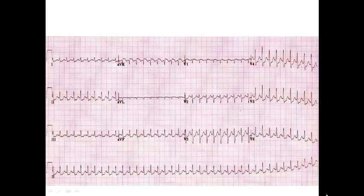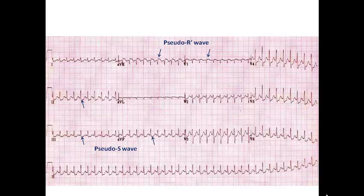We now discuss another ECG feature during SVT: pseudo-R' and pseudo-S patterns. Sometimes a small wave appears at the end of the QRS complex — a negative wave (pseudo-S) in leads II, III, and aVF, and a positive wave (pseudo-R') in aVR and V1.